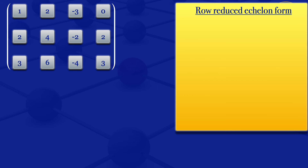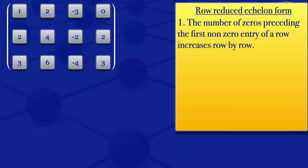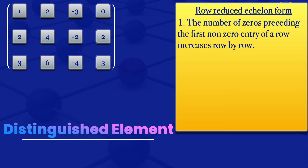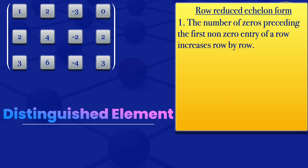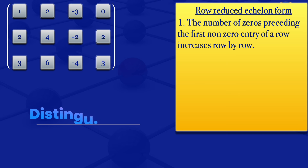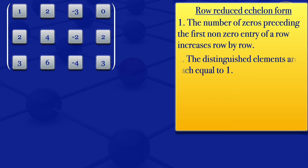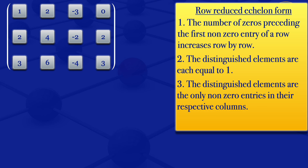For row reduced echelon form, number one would have the number of zeros preceding the first non-zero entry of a row increases row by row. For this first non-zero entry of a row, I'll call it the distinguished element. Then for the second part, we would have that the distinguished elements are each equal to one. Then the third condition is that the distinguished elements are the only non-zero entries in their respective columns.